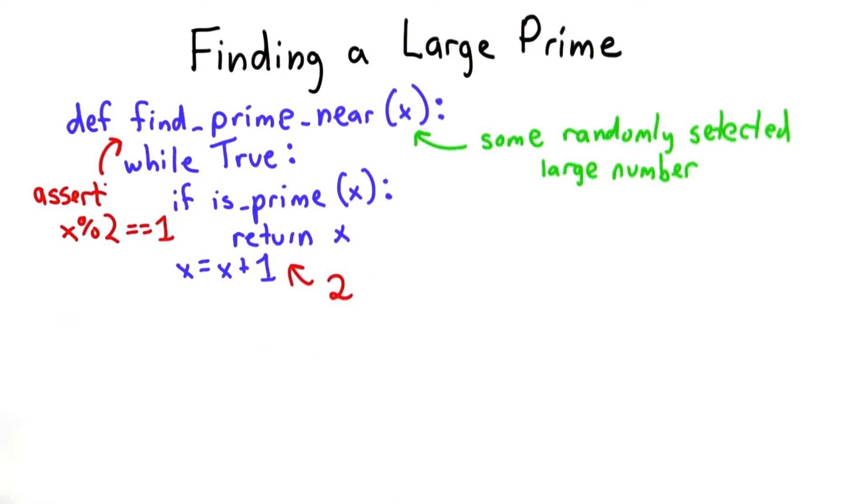We could do a little better if we assume we start with an odd number and we'll assert that x is not divisible by 2, since that's very obvious that it would be prime, and increment by 2 here.